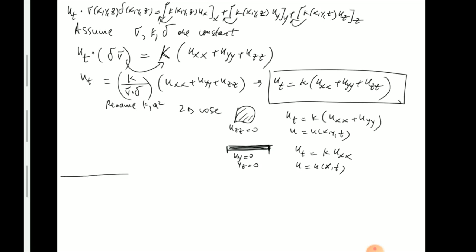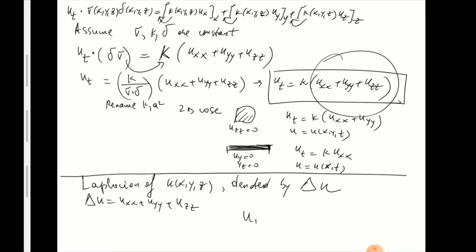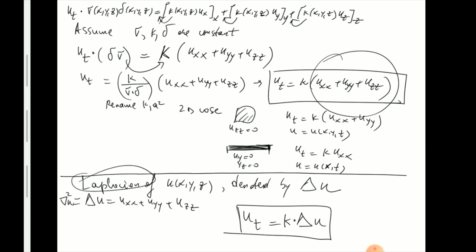One last piece of terminology: the right-hand side of the PDE, the sum u_xx plus u_yy plus u_zz, is called the Laplacian of u, denoted delta u. So delta u equals u_xx plus u_yy plus u_zz. With this notation the heat equation can be written compactly as u_t equals k times delta u. Another notation for the Laplacian is nabla-squared u — just be aware of these various notations.